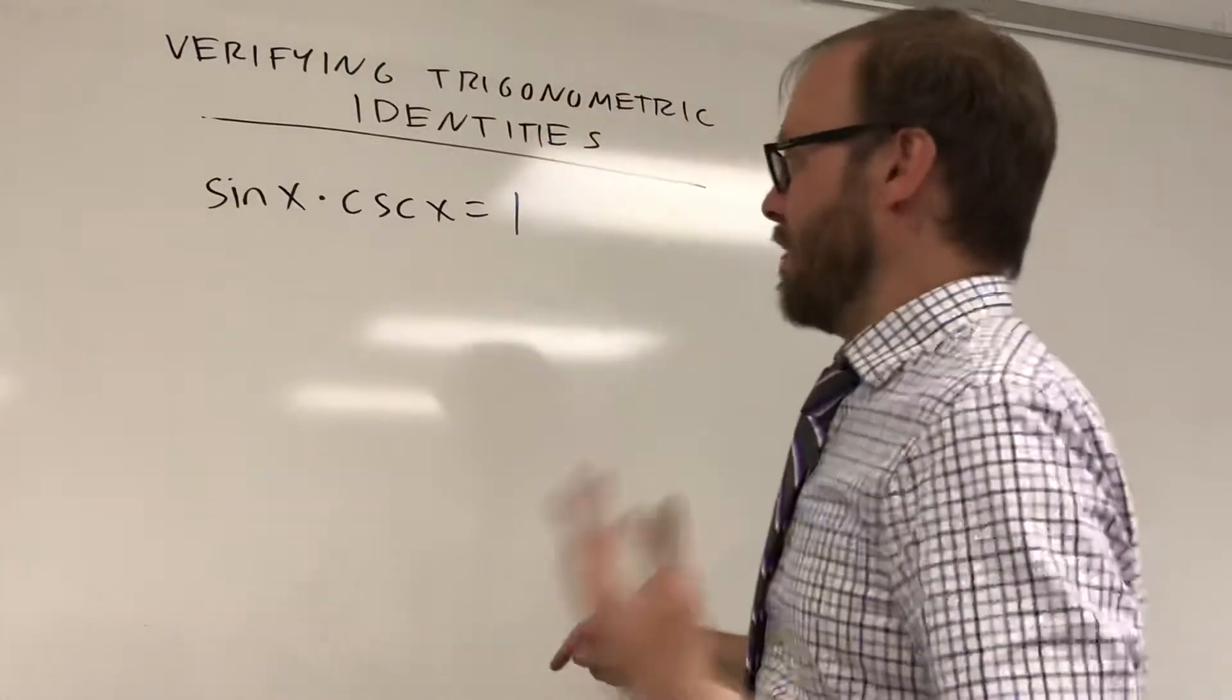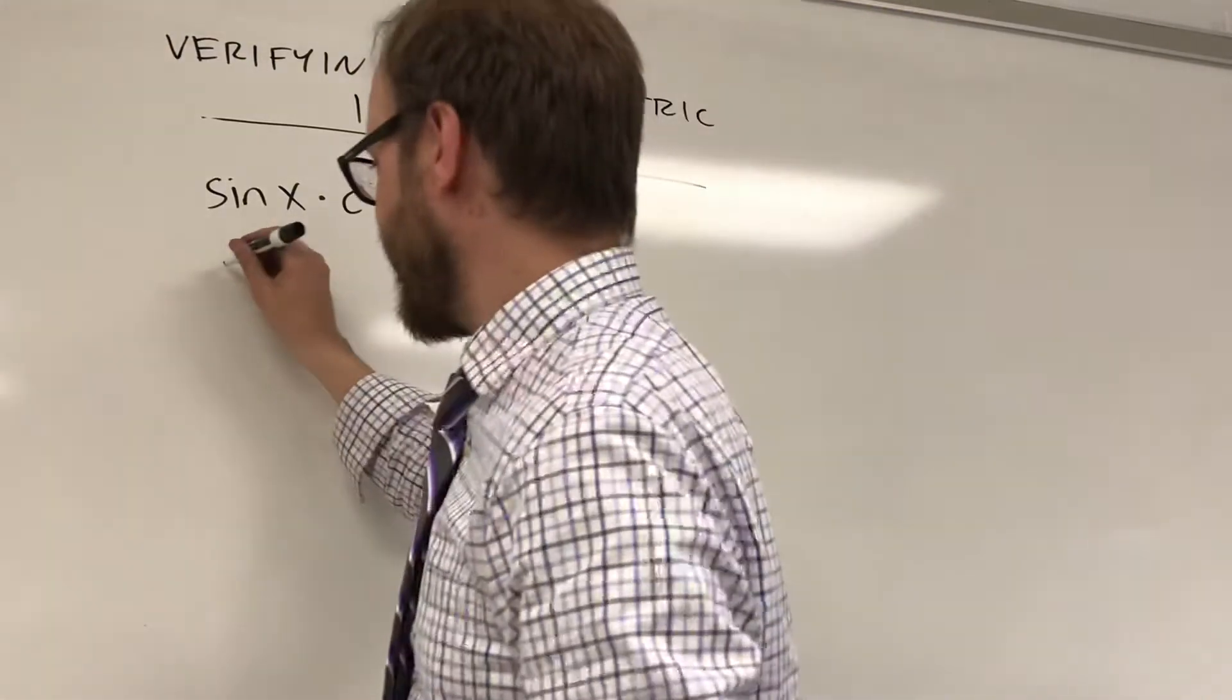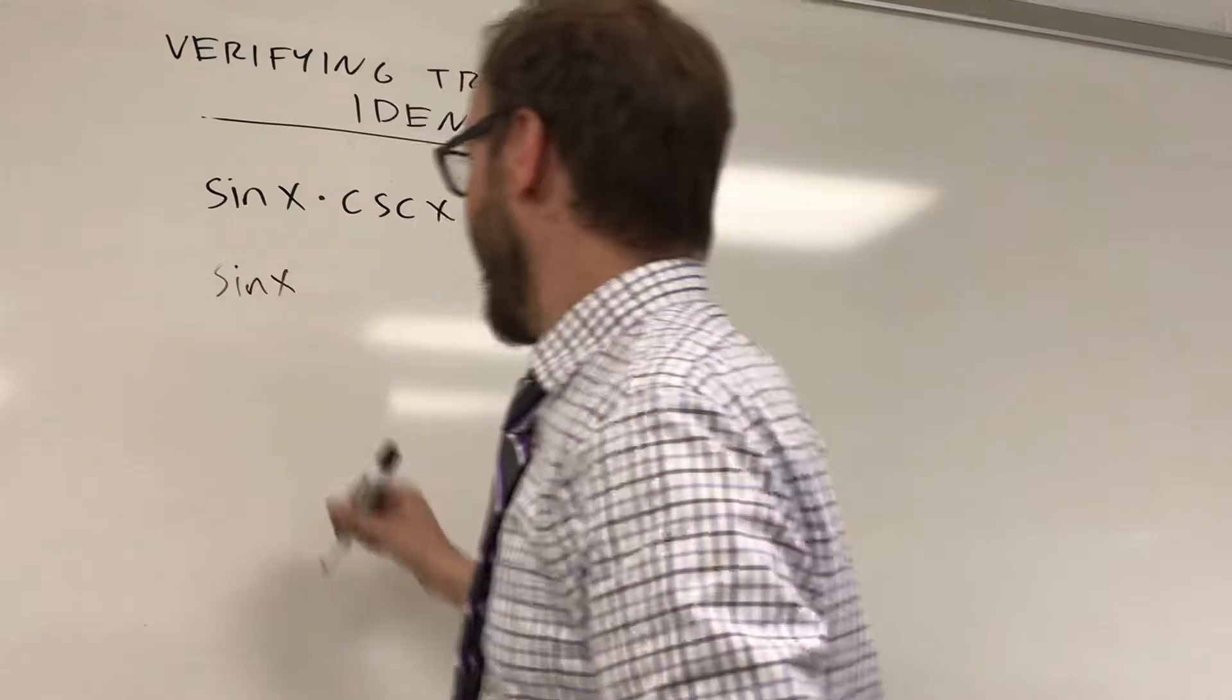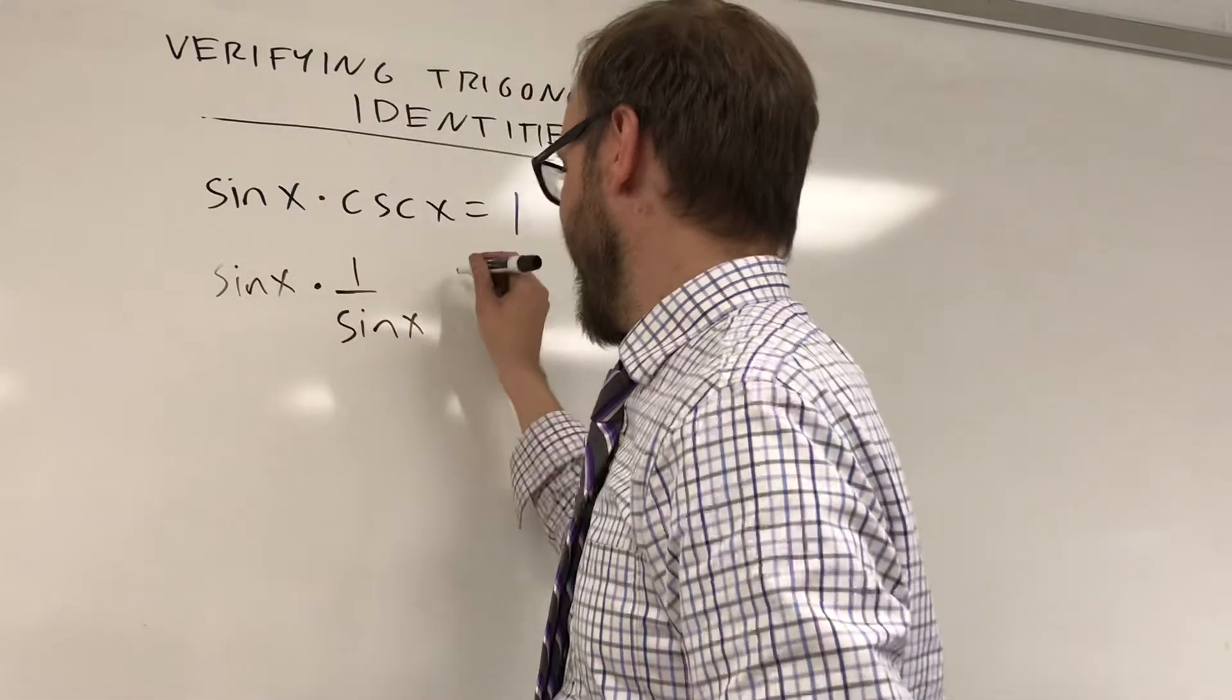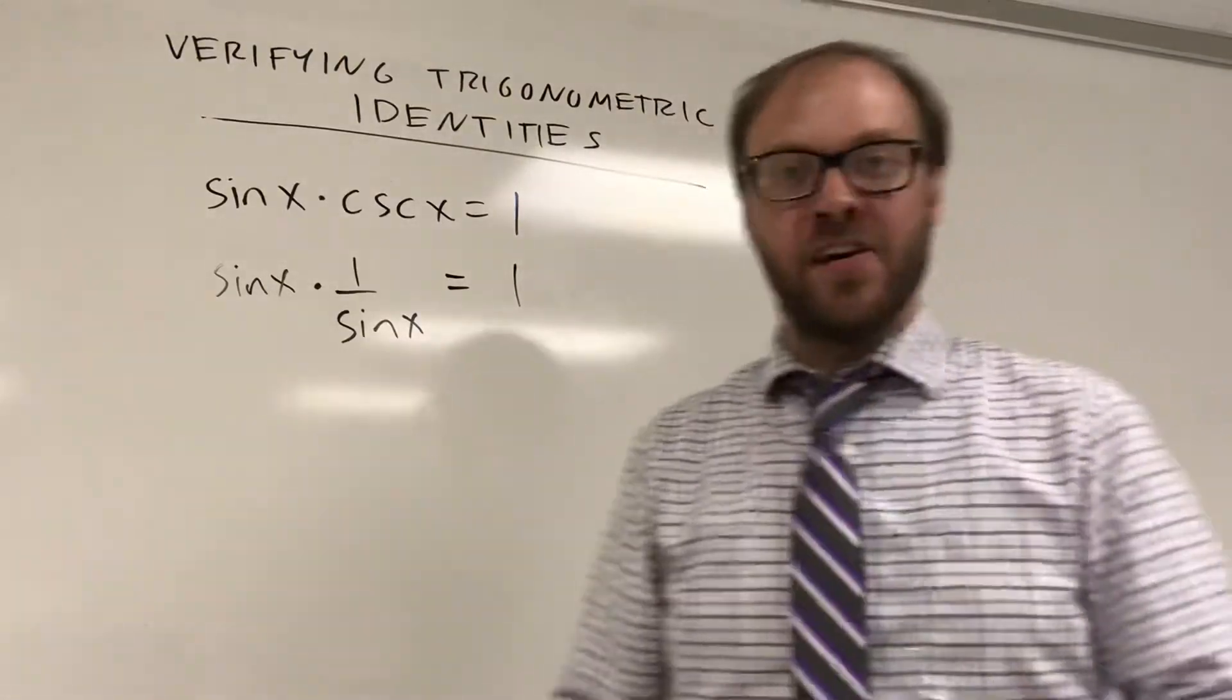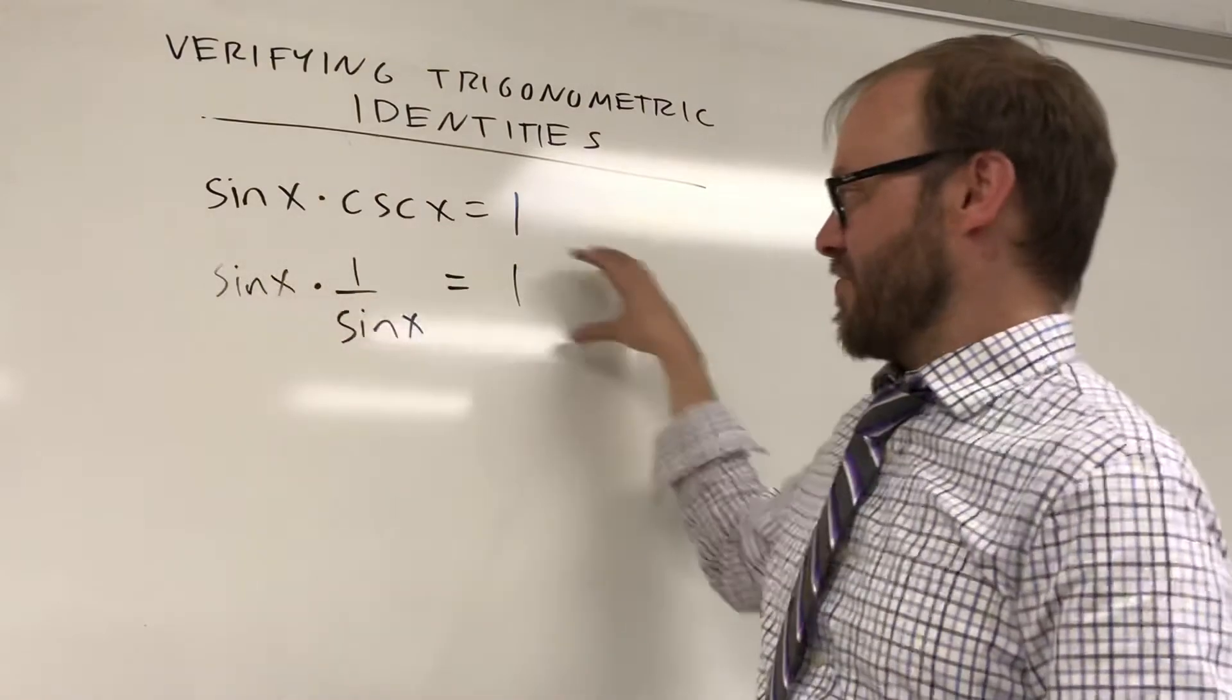So in this one here I know that cosecant's the same thing as 1 over sine. So I'm gonna rewrite the statement. I'm not gonna touch the sine. I'm gonna write that as 1 over sine of x, and I'm not touching the right-hand side here. So again I have a true statement. I wrote another true statement. We're gonna keep going.